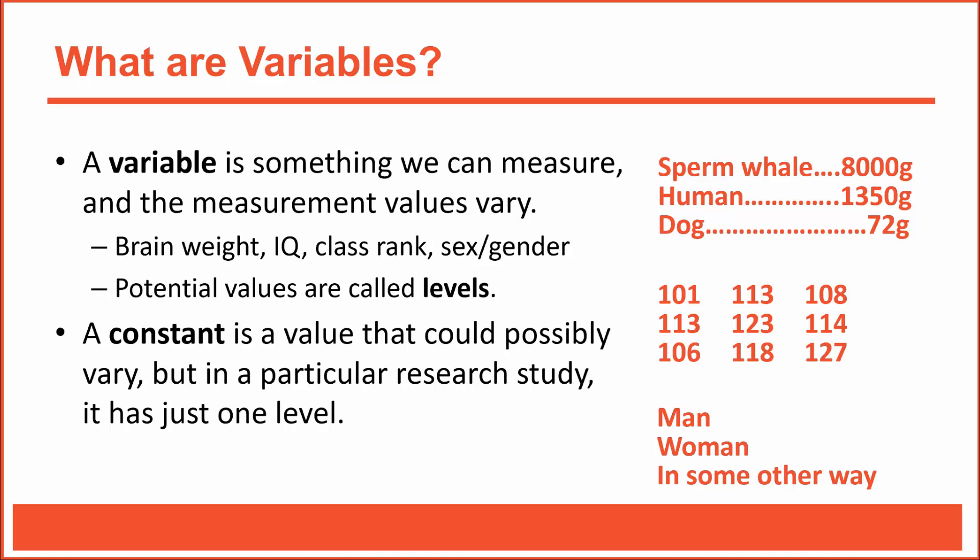Technically speaking, a constant isn't a variable because its value doesn't vary between measurements we take—the value remains constant. For example, if I'm measuring IQ of college students, the IQs I measure would vary, so IQ would be a variable. But if I were to measure student status, each of my participants would be classified as a student—the measurements would be constant, the data wouldn't vary. So in that particular research study, student status would be a constant. In a sense, a constant is a variable with just one level.